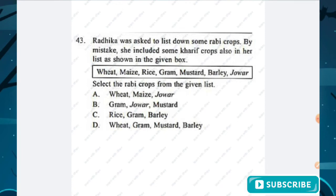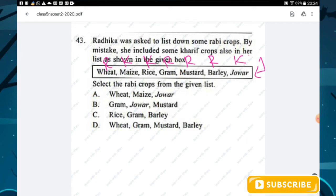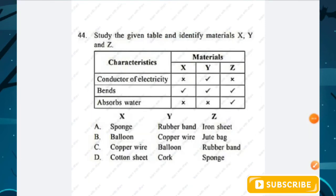Question number forty-three: Radhika listed rabi crops but included some kharif crops by mistake. Wheat, gram, mustard, and barley are rabi crops. Maize, rice, and jowar are kharif crops. Options A, B, C include kharif crops in the rabi list. Option D correctly lists only rabi crops — wheat, gram, mustard, barley. Option D is the right answer.